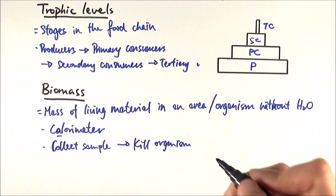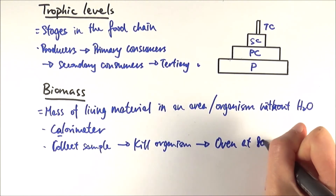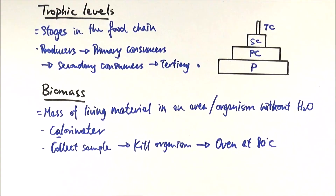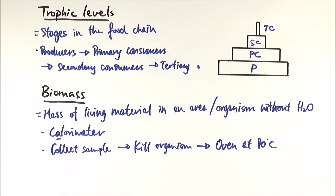You then need to kill the organism — even though it seems obvious, make sure it is clearly written out in your answer. After that, you place the sample into an oven at 80 degrees Celsius. At 80°C, most of the water is removed by evaporation without burning it at 100°C, which could cause some of the organic material to decay or disintegrate. You keep checking the mass periodically, and once the mass stops changing, all the water has been removed — that constant mass is the biomass.